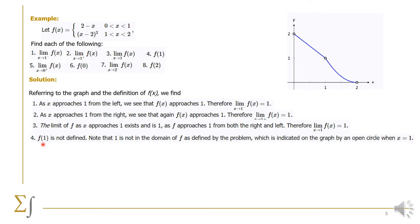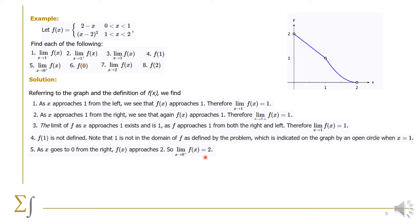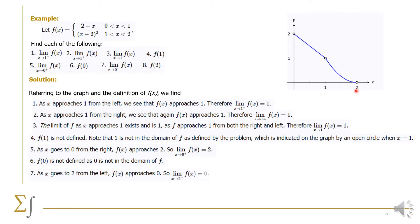Although f(1) is not defined — it doesn't have to be defined — f(1) from question 4 is not defined because we have an open circle there. As x goes closer to 0 from the right, the function gets closer to the value 2, so the limit of f(x) as x goes to 0 from the right is equal to 2. f(0) is not defined because 0 is not in the domain of the function. The limit of f(x) as x approaches 2 from the left: we can see it approaches 0. And f(2) is not defined — it is not in the domain of the given function.